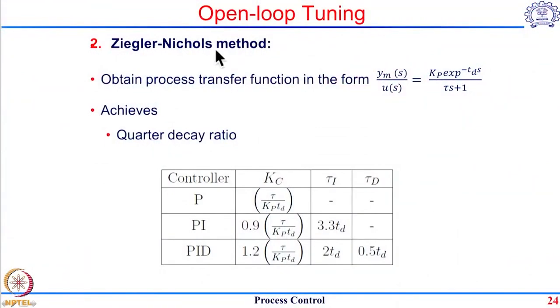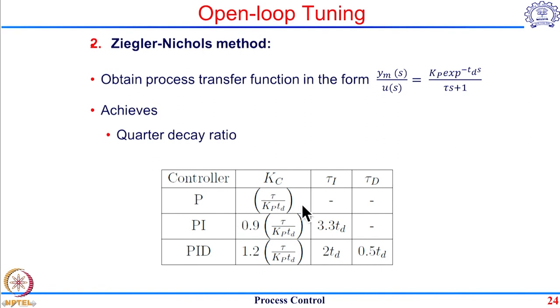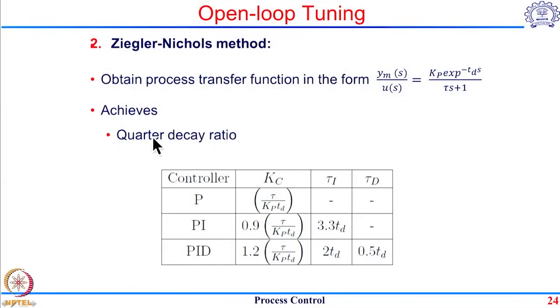Another open loop tuning method is the Ziegler-Nichols open loop tuning method. Note there is also a very popular Ziegler-Nichols closed loop tuning method — here we are covering the open loop variant. This is a simpler method that penalizes only the quarter decay ratio. The same trend is followed: the P controller has an intermediate gain, PI has a lower gain than P, and PID has a higher gain than P. These are the two commonly used methods for open loop tuning.